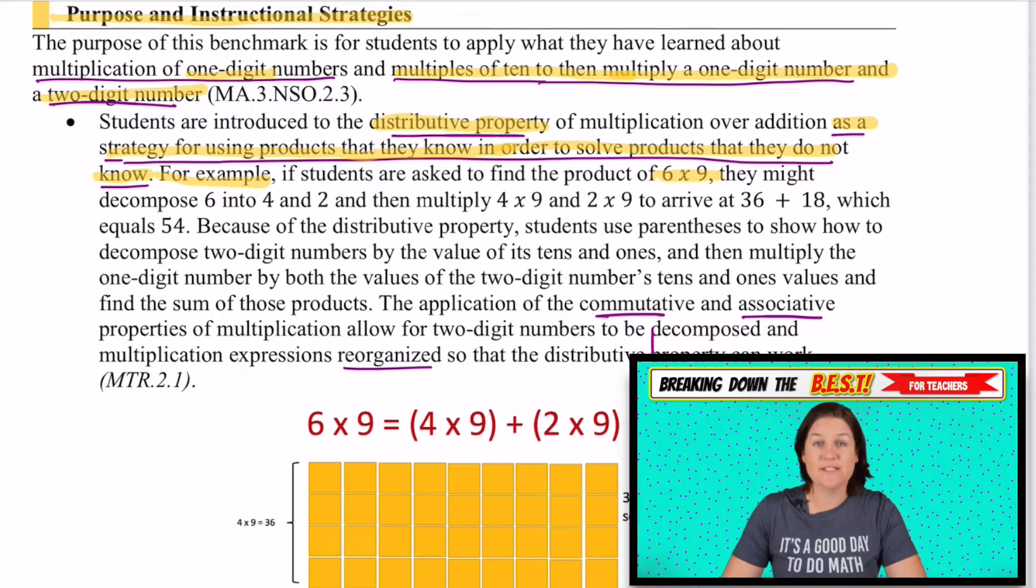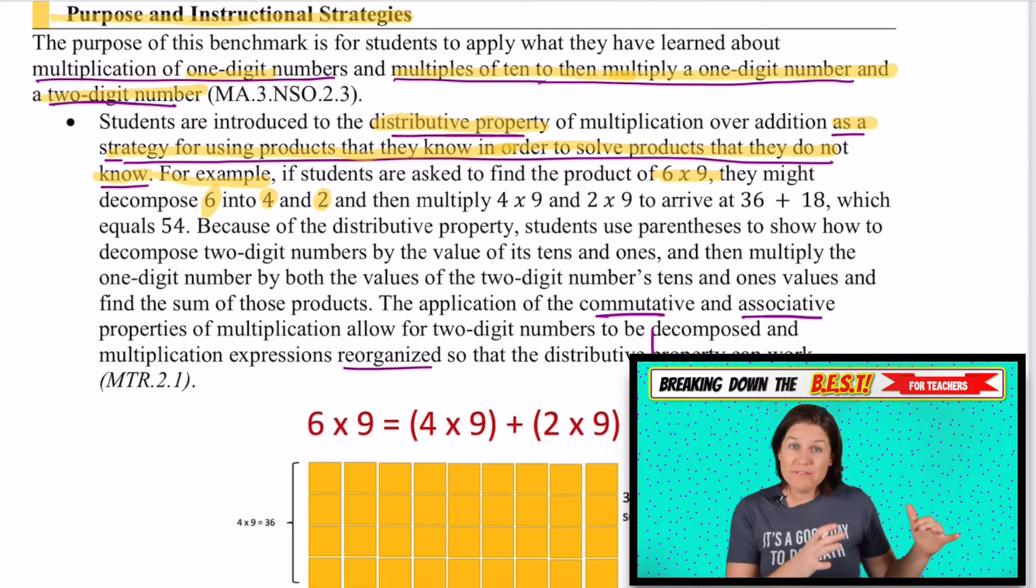For example, if we're trying to find the product of six times nine, six times nine, especially in third grade is one of those that doesn't come to students right away, but they might decompose six into four and two, which then you could use the double, the doubling strategy for your twos and your double, double strategy for your fours to figure those out. But I would personally, if I had six times nine, I would say, oh, I know what five times nine is.